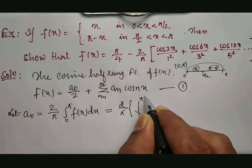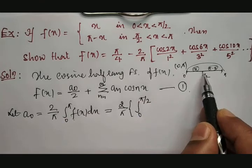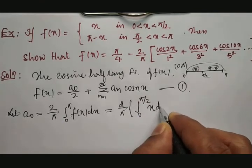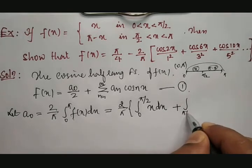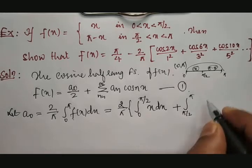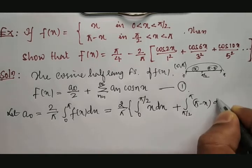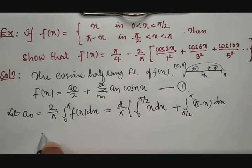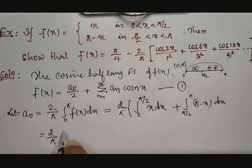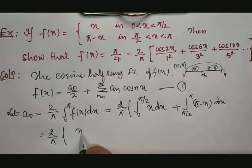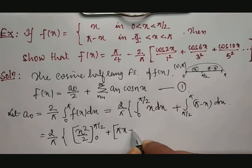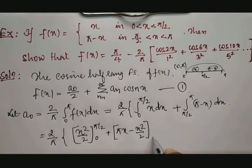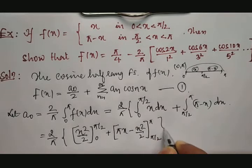The calculation for a naught will be obtained using the formula: 2 by pi, integration between 0 to pi, f of x dx. But between 0 to pi we have two sections: 0 to pi by 2 and pi by 2 to pi, which we need to segregate. So: 2 by pi times integration from 0 to pi by 2 of x dx, plus integration from pi by 2 to pi of (pi minus x) dx.